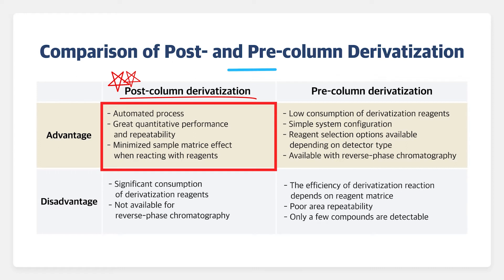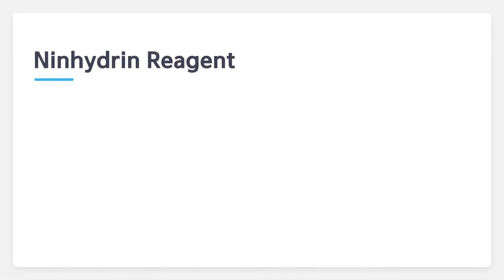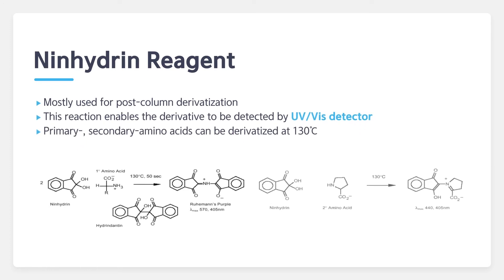But there are many disadvantages to consider when using pre-column derivatization. Let's look through the difference of reagents. Ninhydrin reagent is mostly used for post-column derivatization, and the ninhydrin derivatives are detectable by UV visible detector. Primary and secondary amino acids can be derivatized with ninhydrin at 130 degrees Celsius.